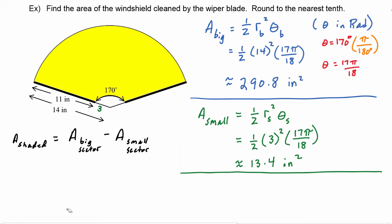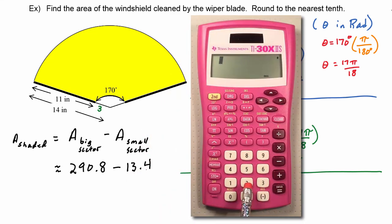So now we're ready to plug those values in. We know that the area of the big sector is going to be 290.8. We have to subtract away the area of the small sector, which we just found out was approximately 13.4. We enter those on our calculator: 290.8 minus 13.4.